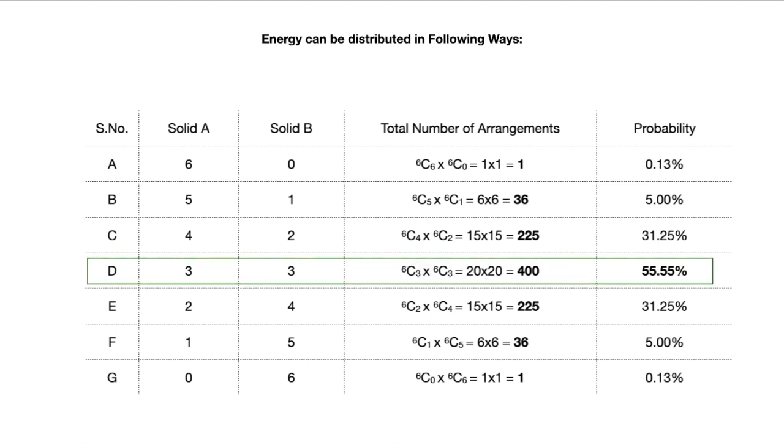Now it is very clear that in row D we have the highest number of arrangements and the highest probability. If you look at how the quanta of energy is distributed between solid A and B, they are equally distributed: three quanta to solid A and three to solid B.